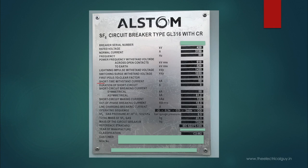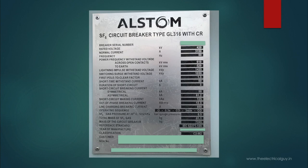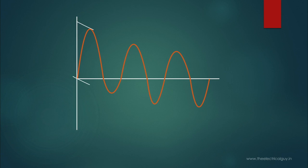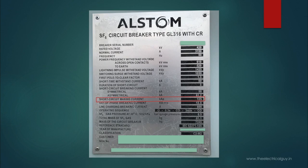Rated duration of short circuit is the time in seconds for which the circuit breaker can withstand the short circuit current — as per standard it can be 3 seconds or 1 second. Rated peak withstand current, or rated making current: if the circuit breaker closes during an existing fault, current may increase to a very high value during the first cycle, and the breaker must withstand this current and the mechanical forces it causes. It is generally 2.5 times the rated short circuit current, given in kiloampere peak. So 2.5 × 50 kA gives 125 kA making current.